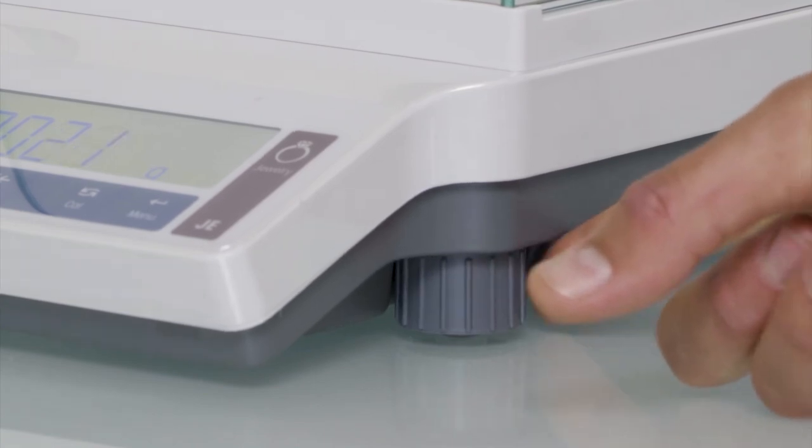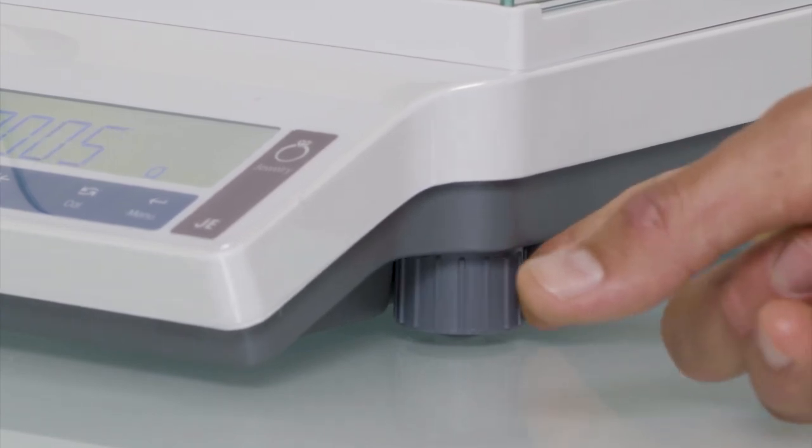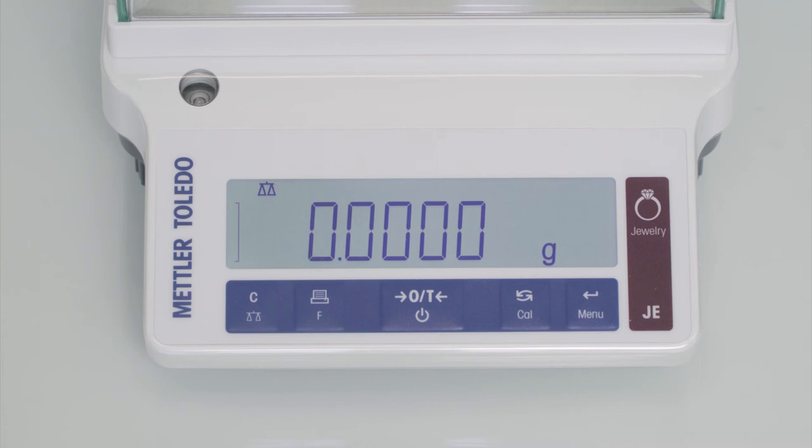Moreover, two large adjustable feet help you to level your balance quickly. The level indicator is at the front so it's easy to check and ensure your balance is working accurately.